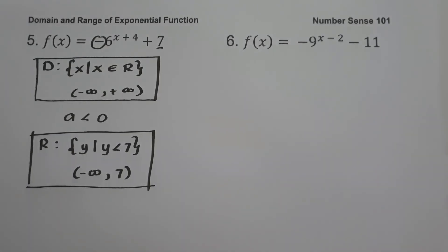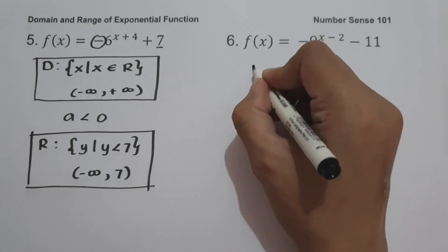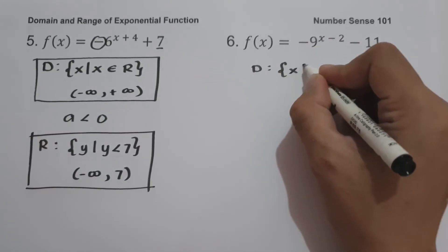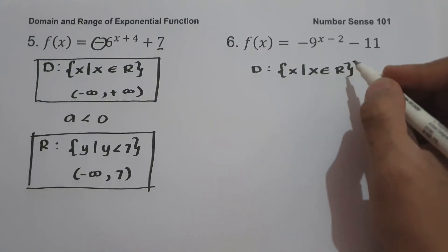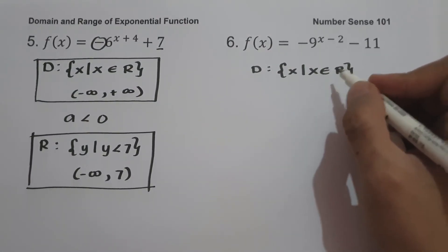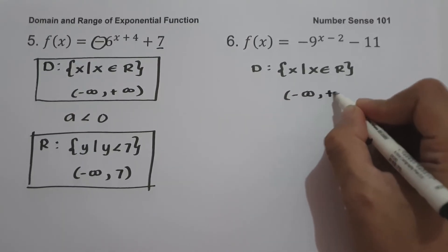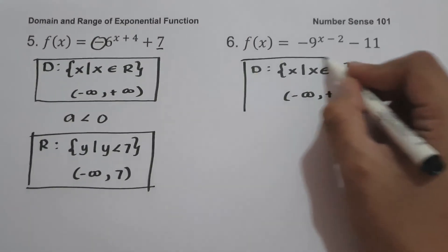On example number 6: f(x) = negative 9 raised to x minus 2 minus 11. The domain is the set of x values such that x is the set of all real numbers, or in interval notation, from negative infinity up to positive infinity.